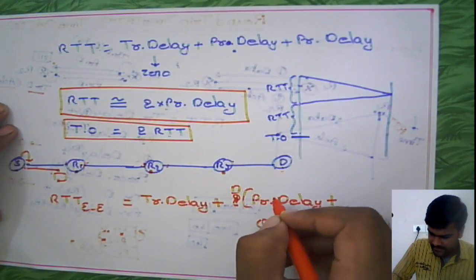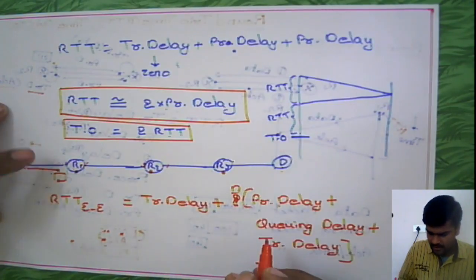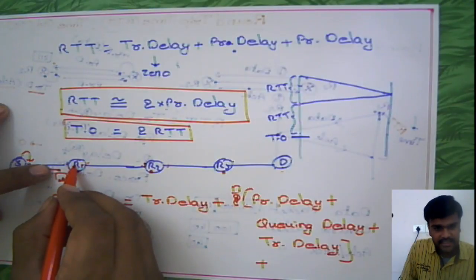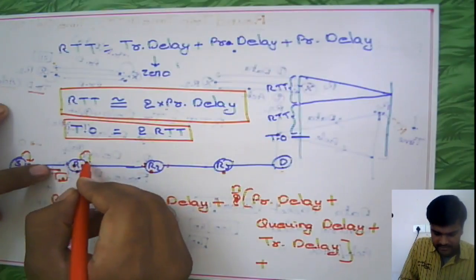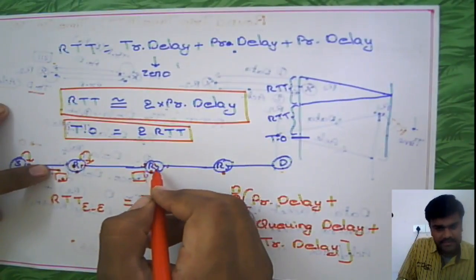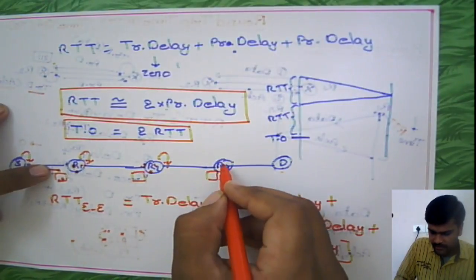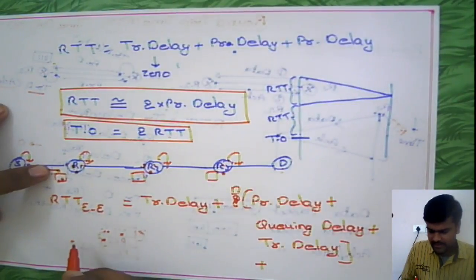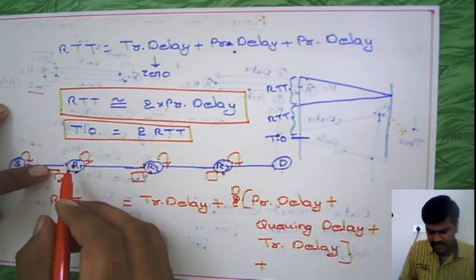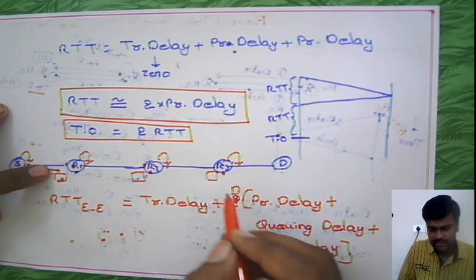Correction: the delay inside each router consists of queuing delay plus processing delay, plus transmission delay. So at each router there are three components: queuing delay, processing delay inside the router, and transmission delay. With N routers, the total router delay is N times these three delays.